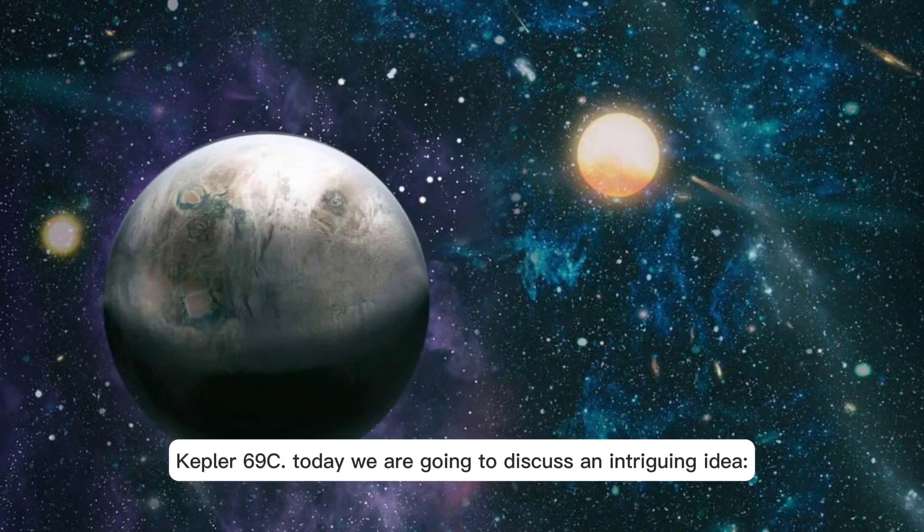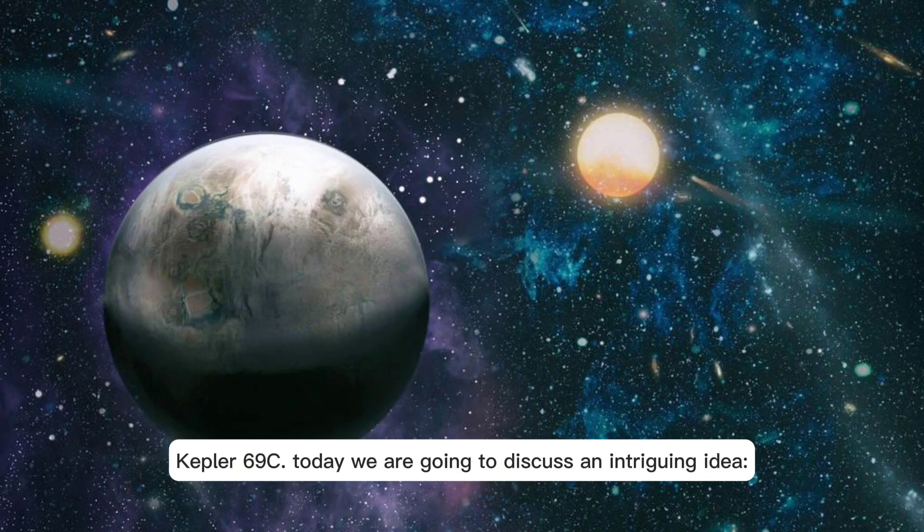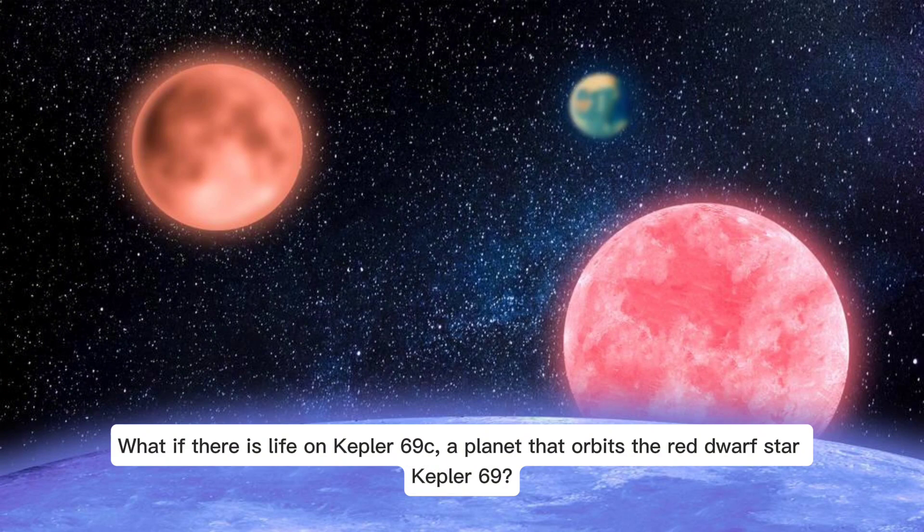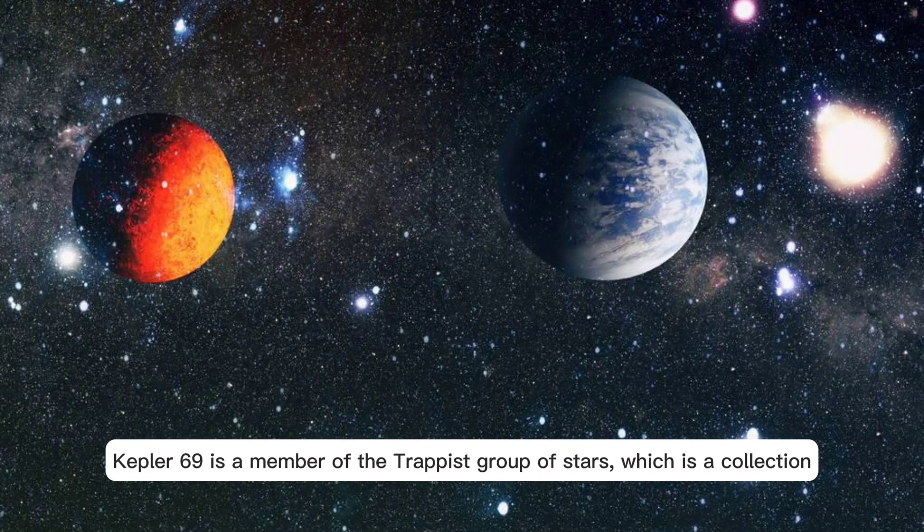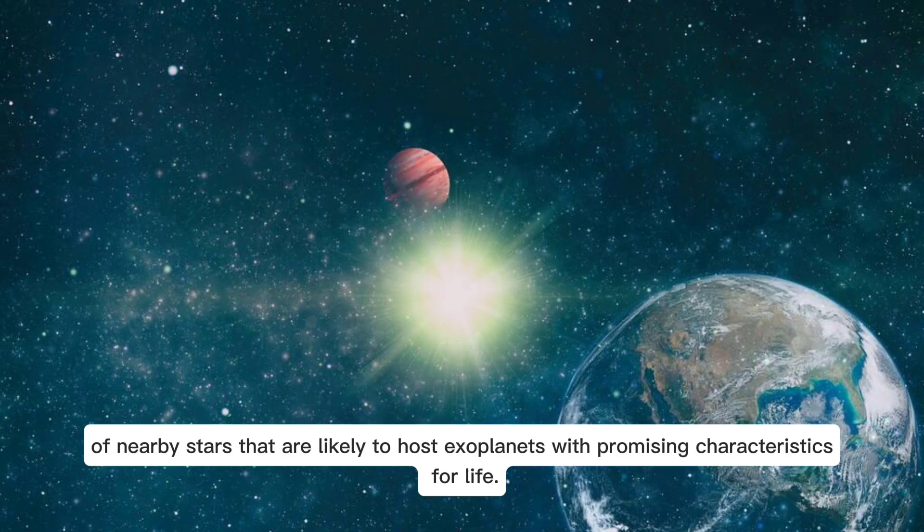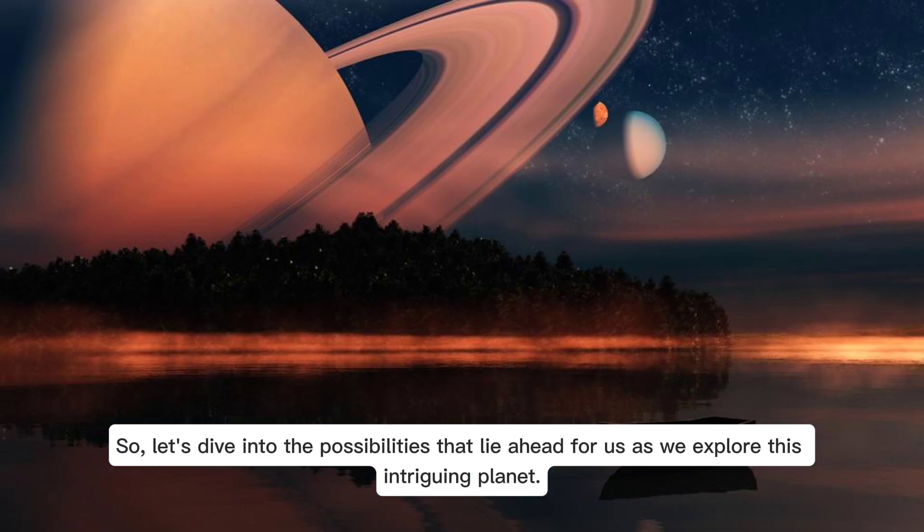Kepler 69c. Today we are going to discuss an intriguing idea: what if there is life on Kepler 69c, a planet that orbits the red dwarf star Kepler 69? Kepler 69 is a member of the Trappist group of stars, which is a collection of nearby stars that are likely to host exoplanets with promising characteristics for life.